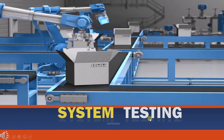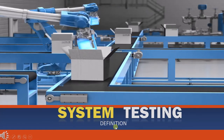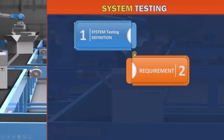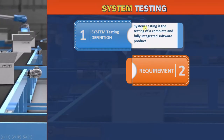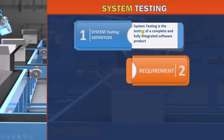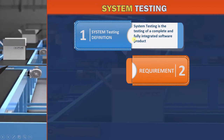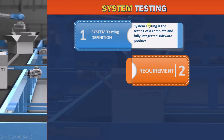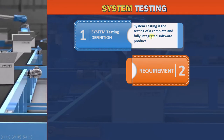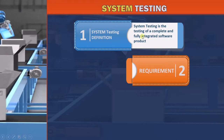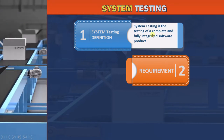In this lecture, we will discuss system testing. Let's start with its definition. System testing is the testing of a complete and fully integrated software product. The key phrase here is 'complete and fully integrated.' This means that the integration testing has been done and all components are fully integrated.